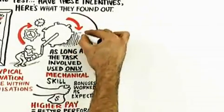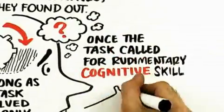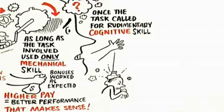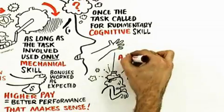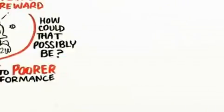But here's what happens: once the task called for even rudimentary cognitive skill, a larger reward led to poorer performance. Now this is strange, right? A larger reward led to poor performance. How can that possibly be?